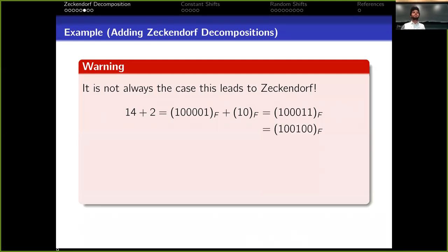Warning! This does not always lead to the Zeckendorf composition. It always leads to a decomposition, but not always the Zeckendorf. So for example, if you have 14 plus 2, when we add them, we have two consecutive ones. That's not allowed. Nevertheless, we can use the relation that F₁ plus F₂ is F₃ in this case to simplify it and get the Zeckendorf composition of 16.